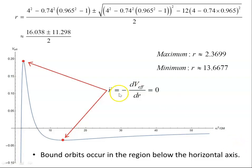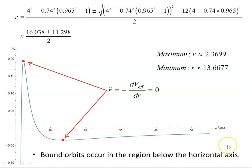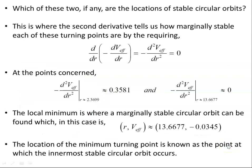Just to note: R-double-dot equals zero gives us these two turning points. Bound orbits occur in the region below the horizontal axis — where the energy of the orbit is less than zero. This video will focus on stability as well as finding the location, and then in the next video I'll focus again on stability.